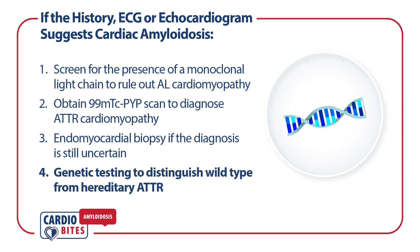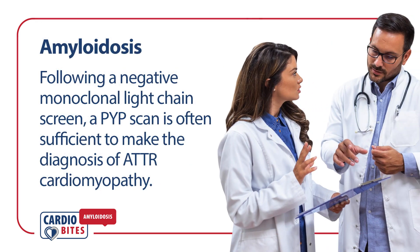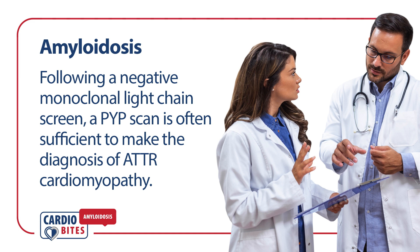Following the diagnosis of ATTR cardiomyopathy, genetic testing should be offered to distinguish wild-type from hereditary transthyretin amyloidosis. In summary, in a patient with HFpEF and LVH, cardiac amyloidosis should always be considered in the differential diagnosis. Following a negative monoclonal light chain screen, a PYP scan is often sufficient to make the diagnosis of ATTR cardiomyopathy.